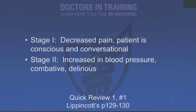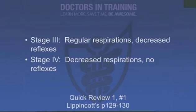It's time for quick review number one. Match the following stages of depth of anesthesia with their characteristics. Stage one: decreased pain, but the patient is conscious and conversational. Stage two: not a good place to be — increased blood pressure, combative, delirious, patients may vomit. Stage three: regular respirations, decreased reflexes — a pretty good state for most procedures. Stage four: decreased respirations, no reflexes — if you're in stage four, you better have them intubated and be controlling their ABCs.